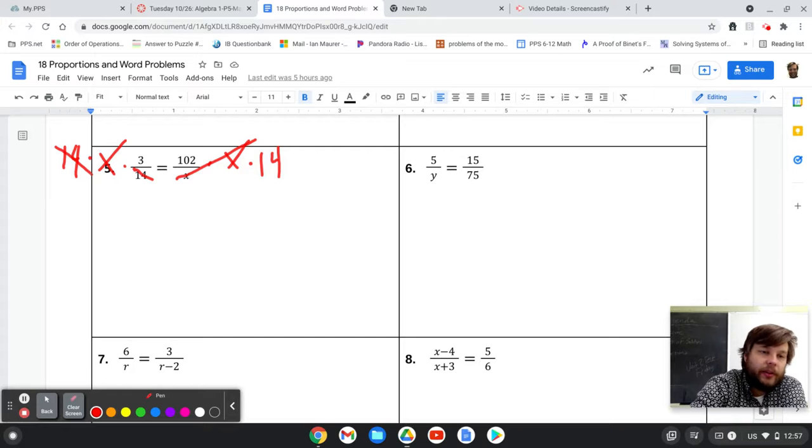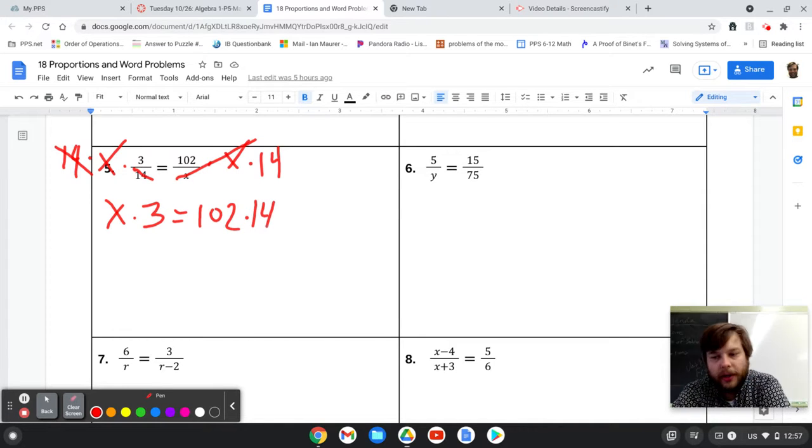So I have x times 3, or 3x, whatever way you want to write it, equals 102 times 14. Many people will call that cross-multiplying. It is just multiplying. You are multiplying by x on both sides, and you are multiplying by 14 on both sides.